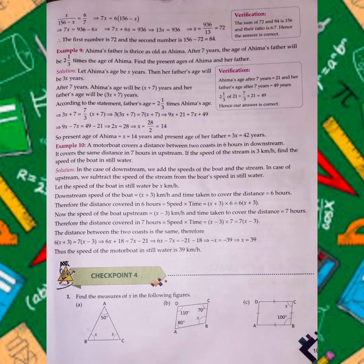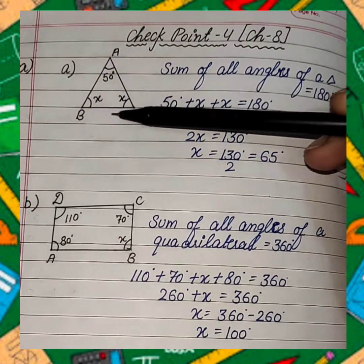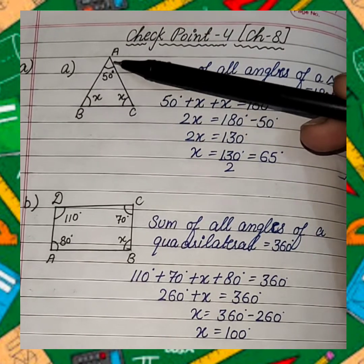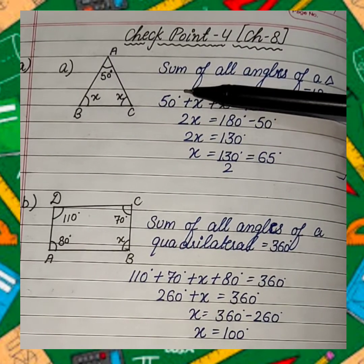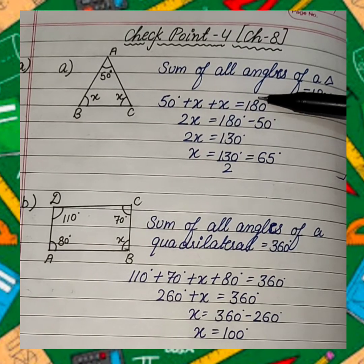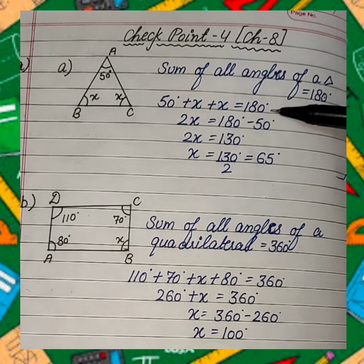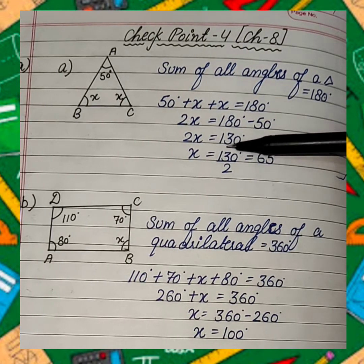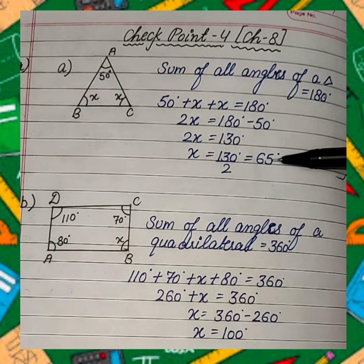In question number 1, figures are given and we have to find the value of x. In part A, triangle ABC is given in which we have to find the value of x. We know the sum of all angles of a triangle is always 180 degrees. So we can write 50 degrees plus x plus x equals 180 degrees. x plus x will give 2x, and 50 degrees will move to the right side. On transposing 50 degrees, this gives 130 degrees. Then x equals 130 degrees divided by 2, that is 65 degrees. This is the value of x.